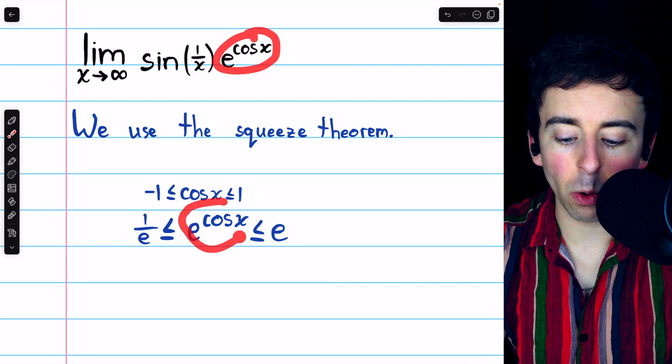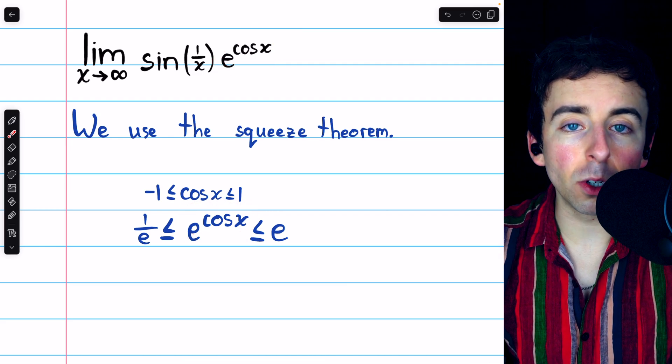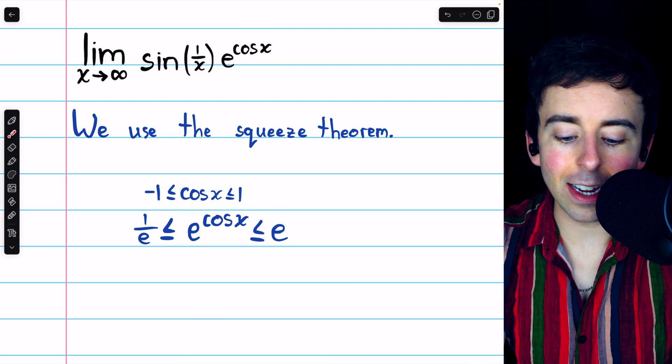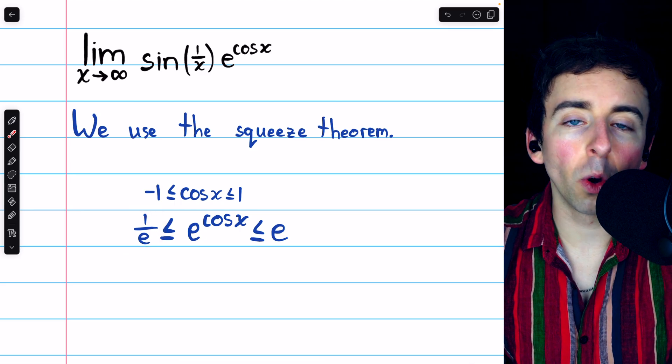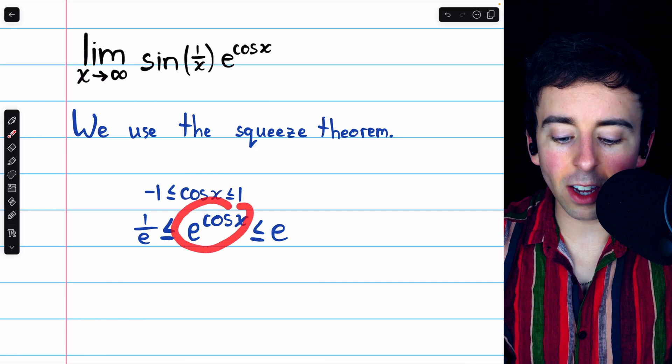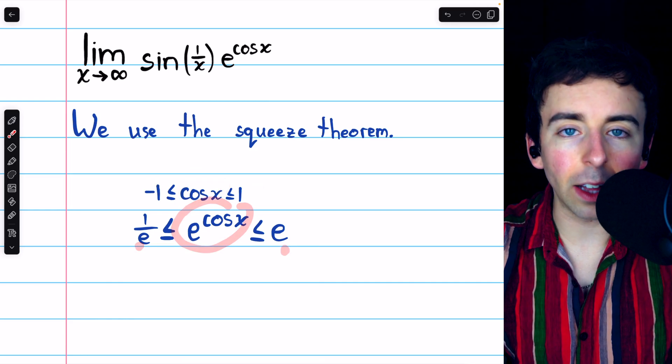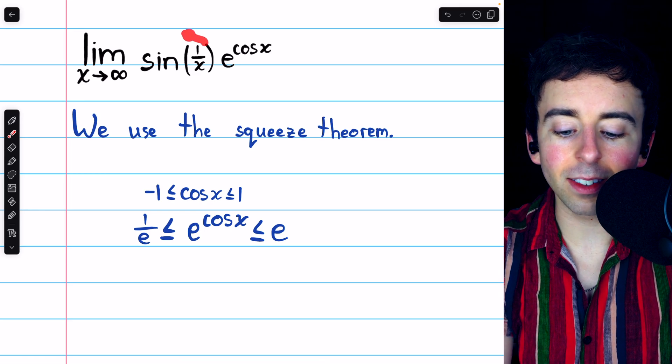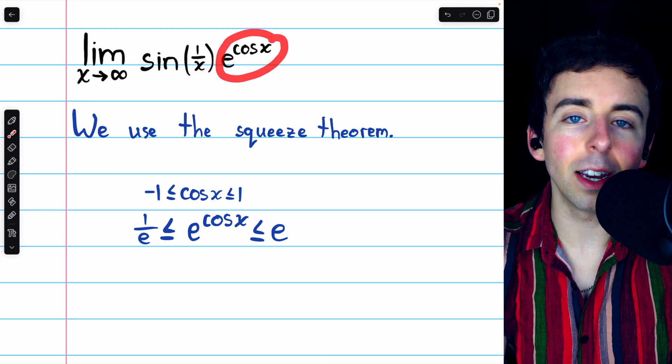Hence, e to the power of cosine x is between e to the positive 1, which is just e, and e to the negative 1, which is just 1 over e. So since cosine x is between these values, we know that e to the cosine x is between these values, but of course, the thing we're trying to prove something about is sine of 1 over x times e to the cosine x.